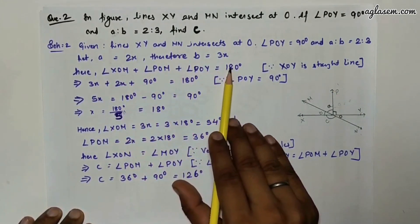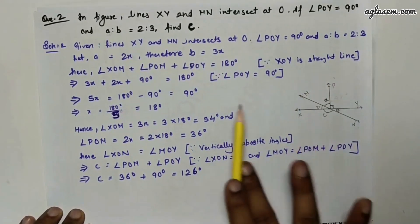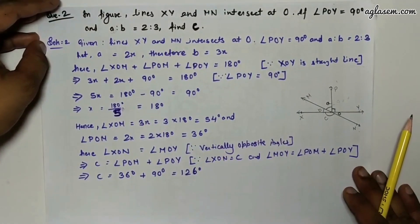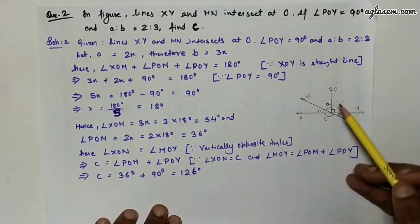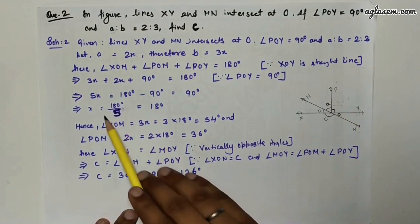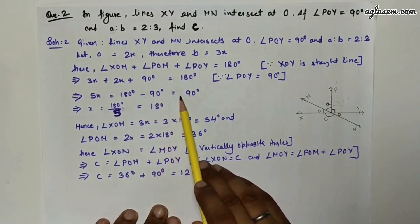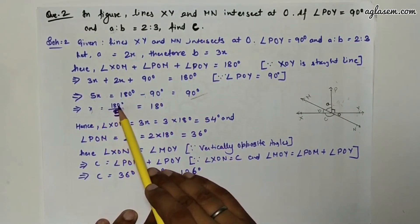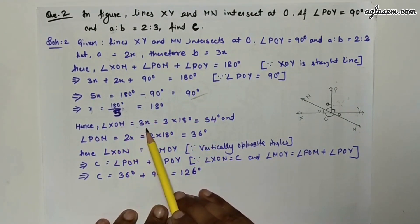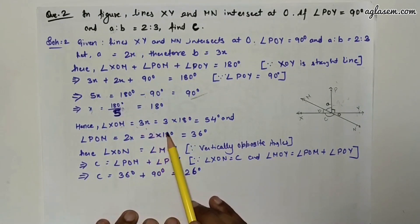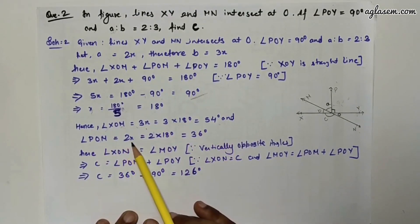Since XOY is a straight line: angle XOM + angle POM + angle POY = 180°. So 3x + 2x + 90° = 180°, giving 5x = 90°, so x = 18°. Therefore angle XOM = 3x = 54° and angle POM = 2x = 36°.